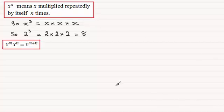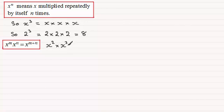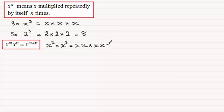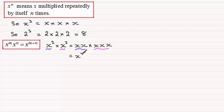When we have x to the power m multiplied by x to the power n, we end up adding the powers. This can be demonstrated: x squared multiplied by x cubed is x times x, multiplied by x times x times x. We're repeatedly multiplying x by itself a total of five times, the result of adding our powers. So this is x to the power 5.